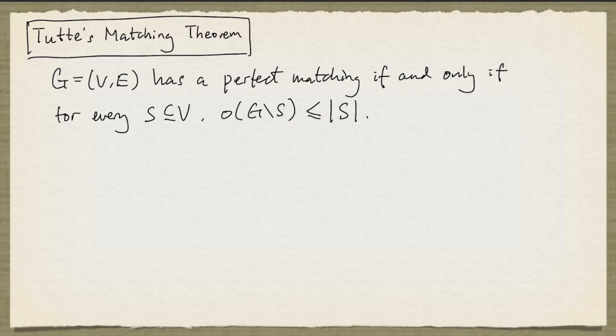So one direction of this theorem says if the graph has no perfect matching, then there is a set S such that its cardinality is less than the number of odd components in G drop S. So the question is how do you find such an S? And we'll address this question in a separate video.